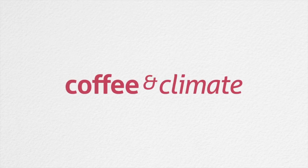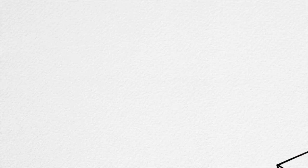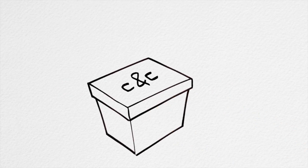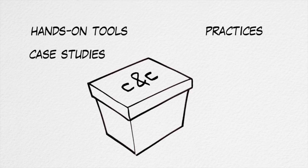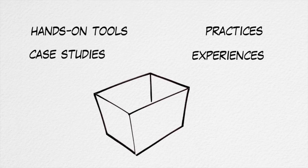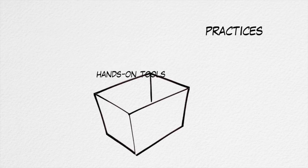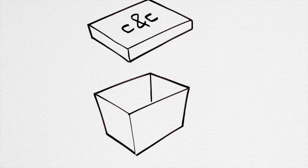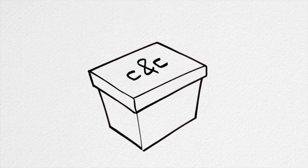The Initiative for Coffee and Climate has been compiling different experiences from around the globe into the C&C Toolbox. This toolbox contains practical, hands-on tools, best practices and case studies from the field. It provides training material to support extension services and other stakeholders in assisting farmers to adapt to changing climate conditions. One toolbox, many reliable solutions. The C&C Toolbox.